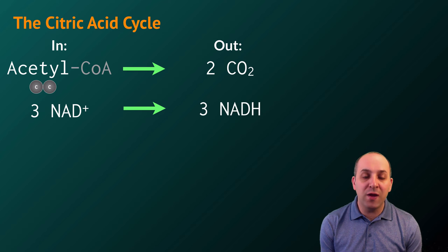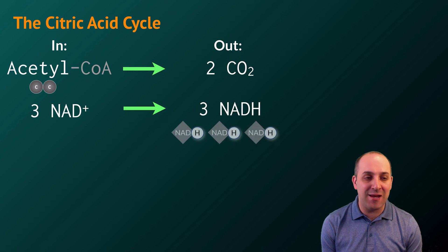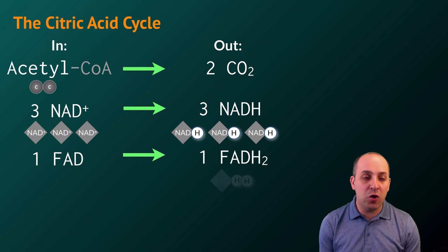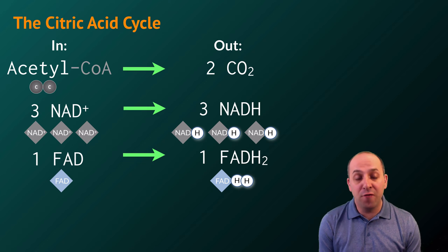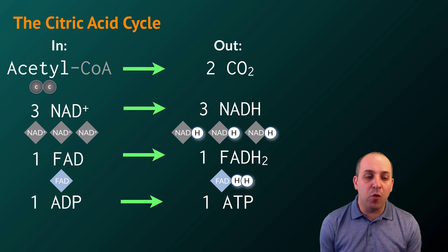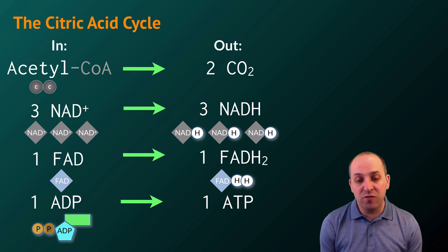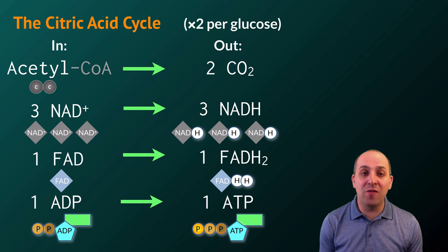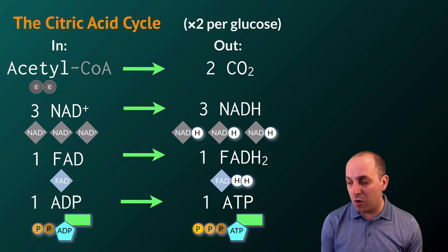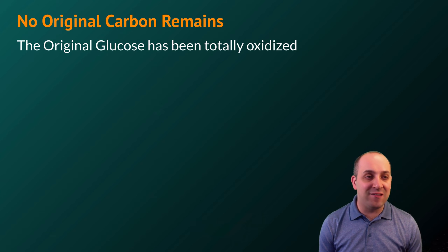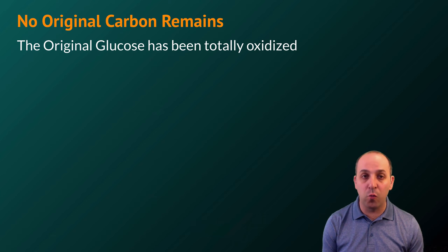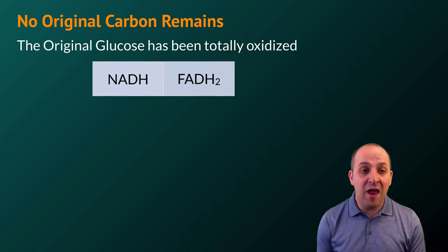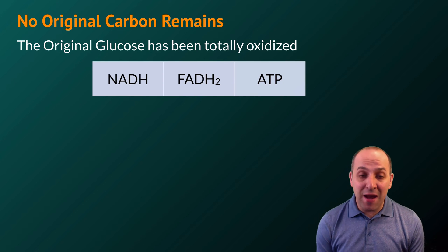We're also going to produce three NADH molecules per turn, so three NAD+ molecules must enter the cycle to make that happen. We'll also produce an FADH2 electron shuttle from an FAD molecule, and we'll convert one ADP into ATP through substrate-level phosphorylation, just like in glycolysis. Remember this is happening twice for every glucose we started with. At the end of the citric acid cycle, no original carbon from our glucose remains — it has all been totally oxidized, and electrons from it have been used to produce NADH, FADH2, and some ATP.